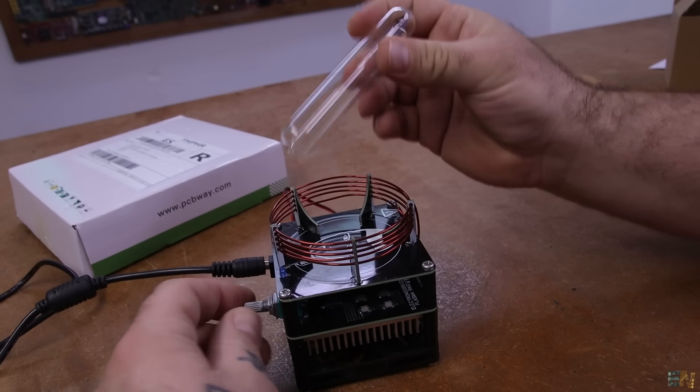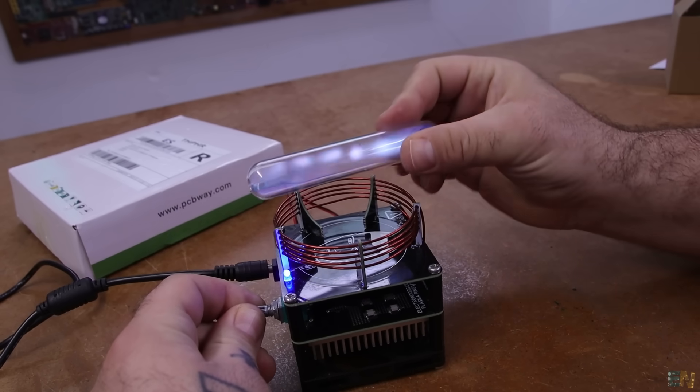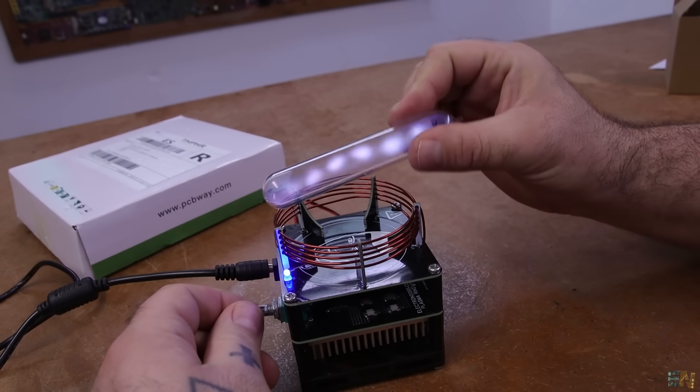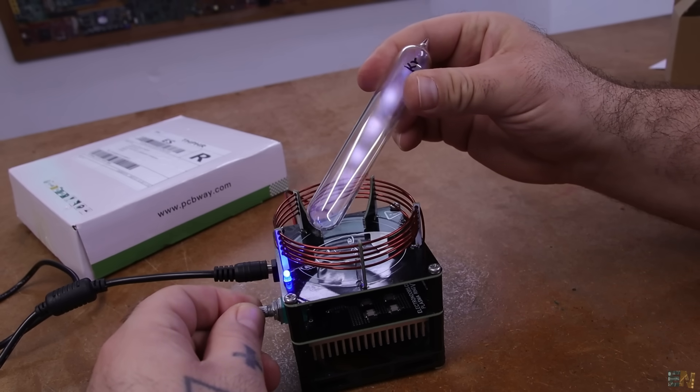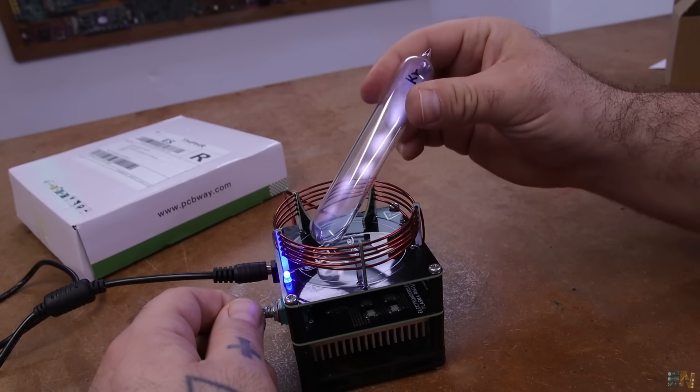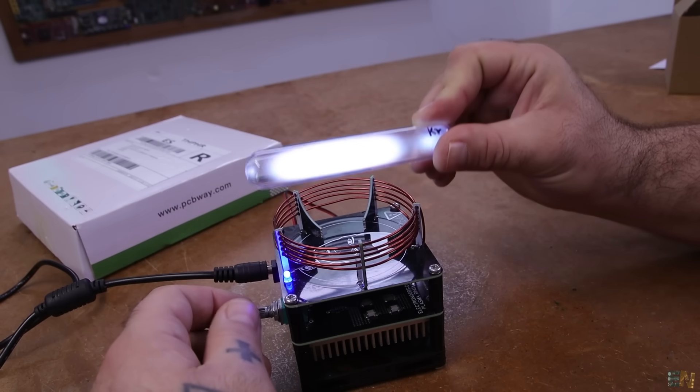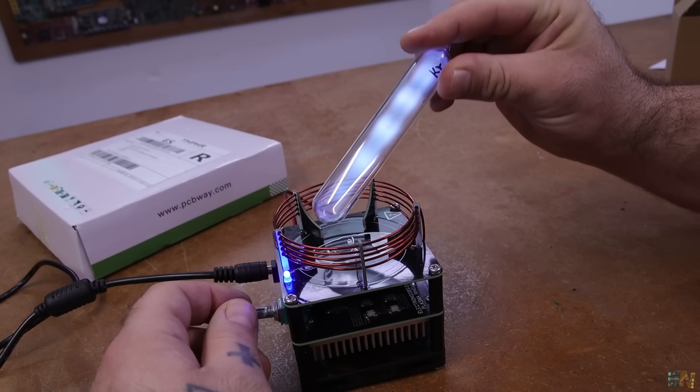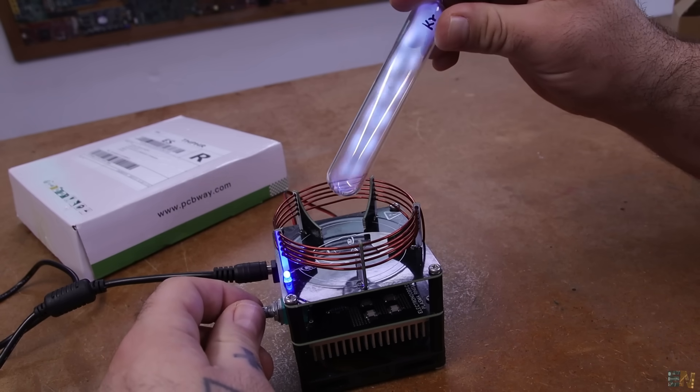You want to see something even crazier? I was making tests with some other gases. This is Krypton. So as you can see, look, it creates some sort of helix inside. Not sure if you can see it on camera. Disappear there. Look at that. Can you see it? It has the shape of a helix.